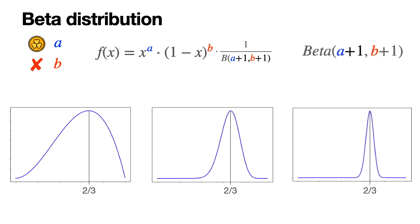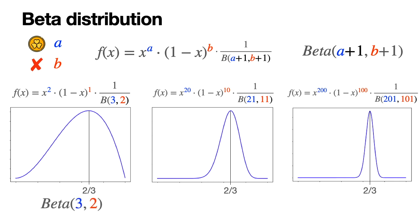This distribution, we call it beta of A plus one, B plus one. And by convention, the parameters are always plus one from the number of times we won and lost. So here we have the formula for the beta distribution of the first case where we won two times and lost once. Here it is for the second case where we won 20 times and lost 10 times. And here it is for the third one where we won 200 times and lost 100. So the first is beta 3, 2, the second is beta 21, 11, and the third one is beta 201, 101.